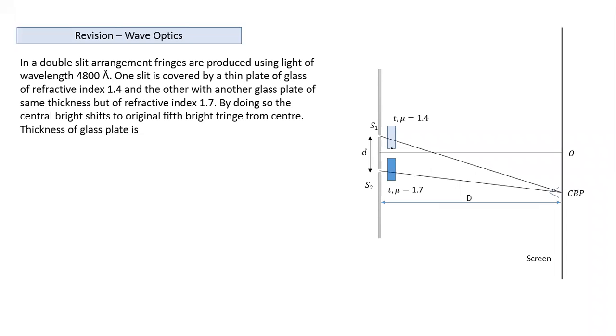Both sheets increase path length, but the sheet with mu equals 1.7 increases it more. The path from S2 is increasing optically.